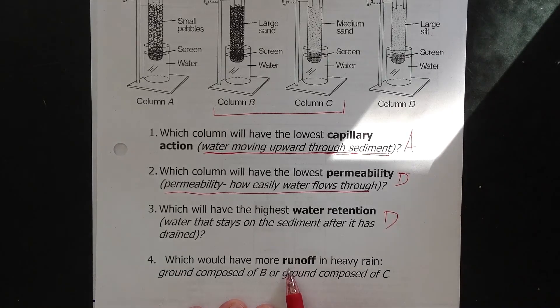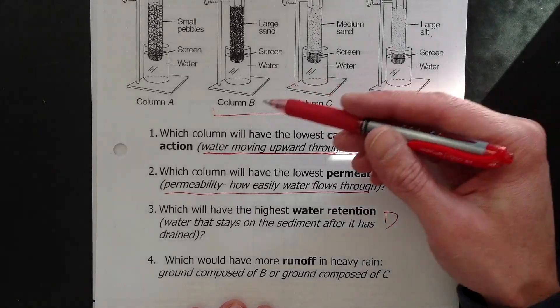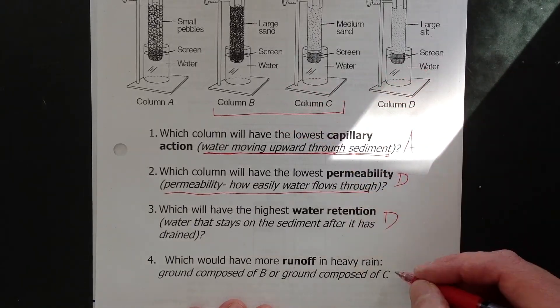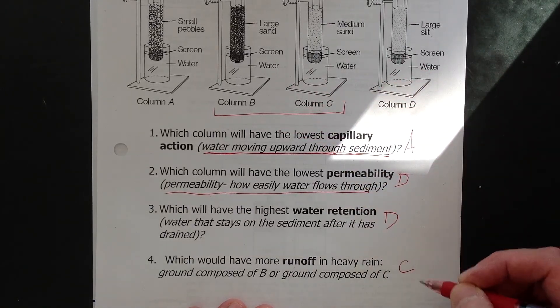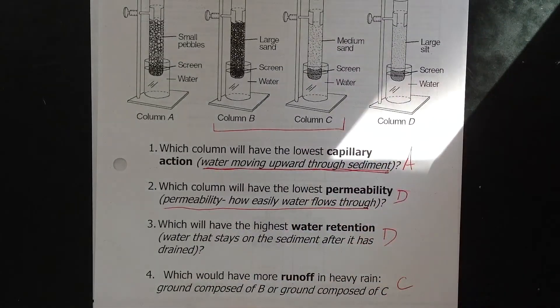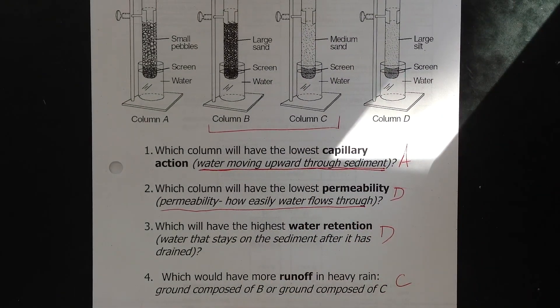Smaller sediment will produce the more runoff because it doesn't go into the ground as easy. So which is smaller, B or C? C. More runoff, less infiltration. B is going to have more infiltration, less runoff than C. Alright, cool.